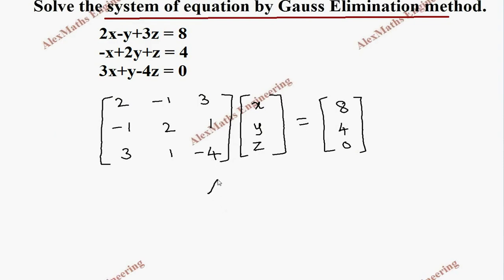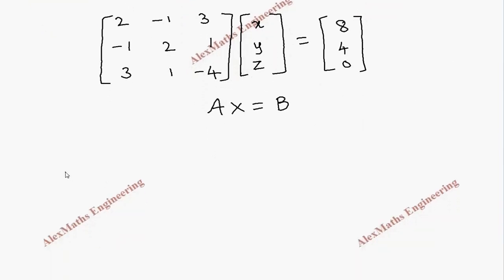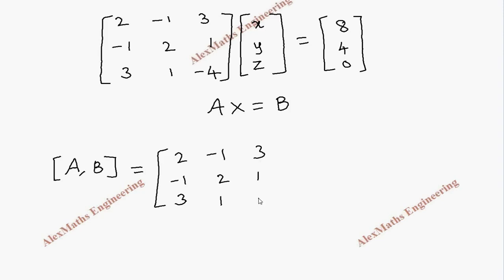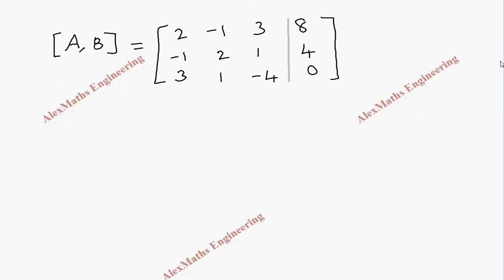This is of the form Ax = b. Now using this we have to write the augmented matrix [A|b]. This augmented matrix is nothing but combining both A and b. The first column is 2, -1, 3; the second column is -1, 2; then we have the third column and fourth column with the constants. To separate this we put a small line here. This augmented matrix [A|b] should be converted to an upper triangular matrix.